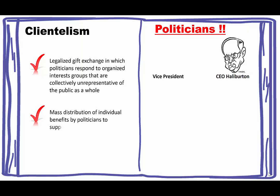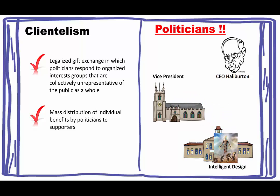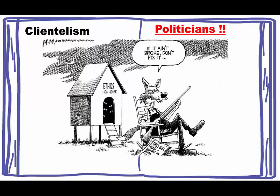It's a legal gift exchange, but the idea is it would make the vice president more open to things that Halliburton wanted, which is certainly not representative of the public as a whole. Another example is mass distribution of individual benefits to a whole religious group — like pushing intelligent design into schools to get their votes. This is where politicians are spearheading the decay, and the challenge is that the people we expect to fix this are the politicians themselves.